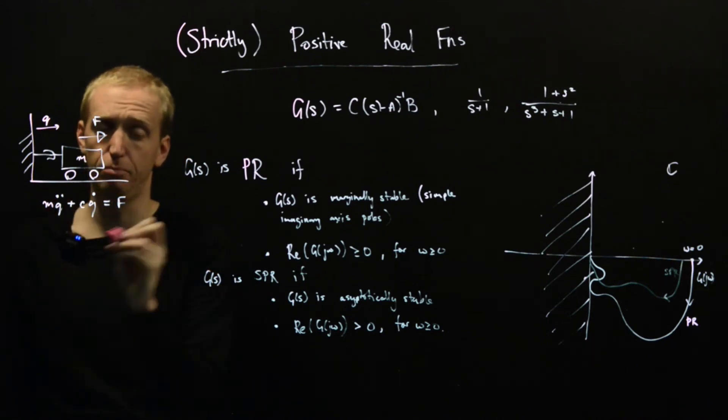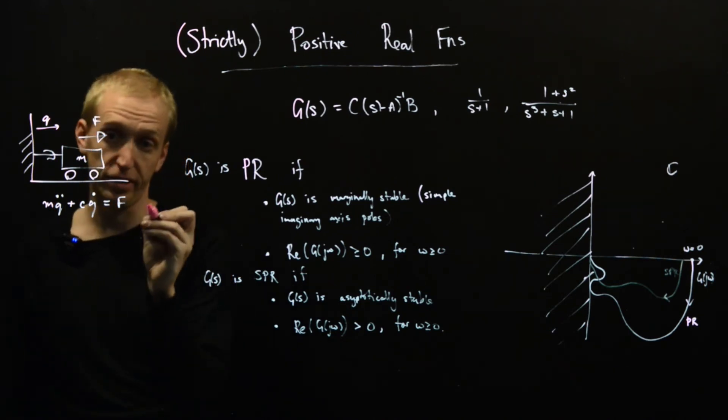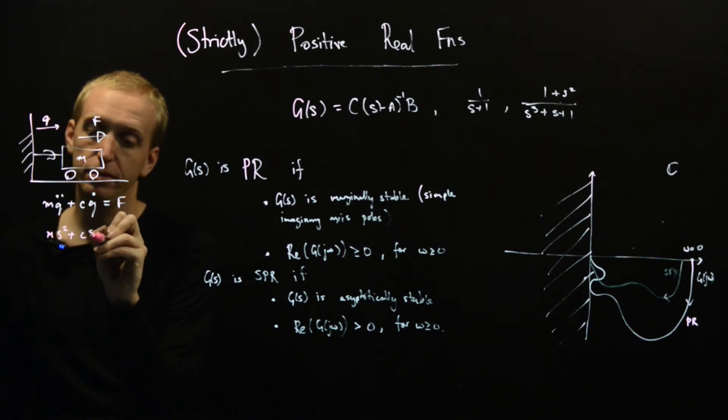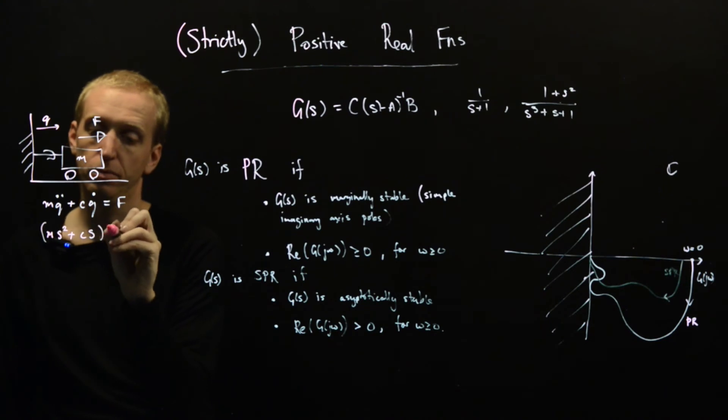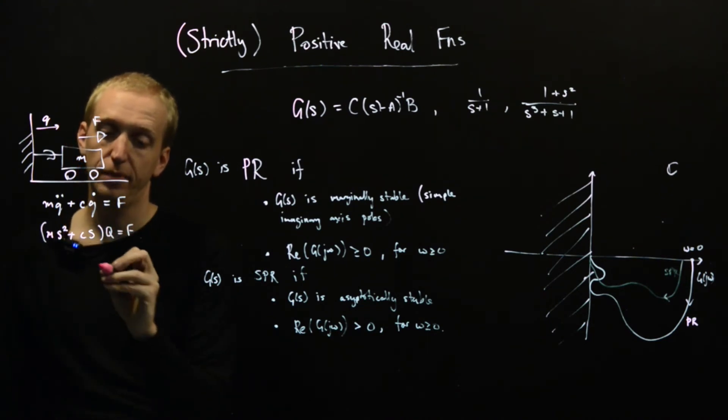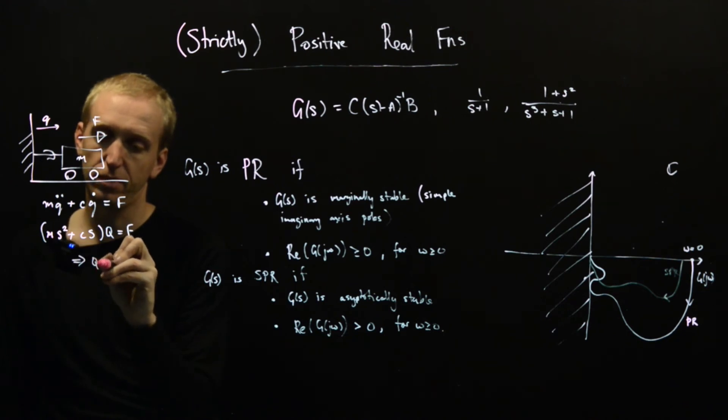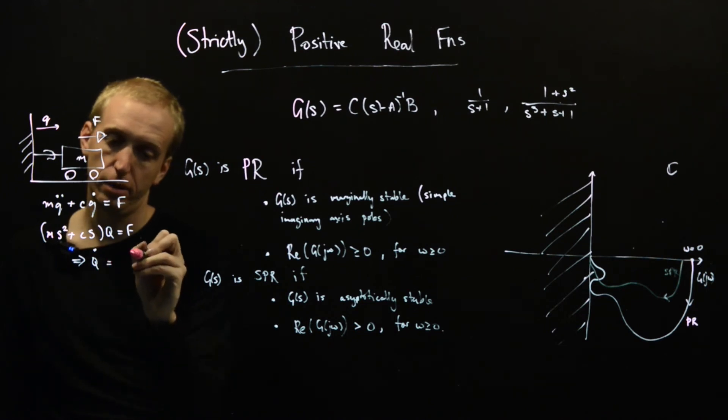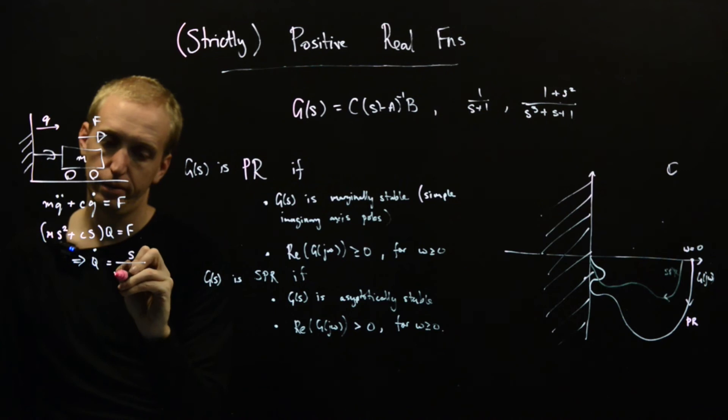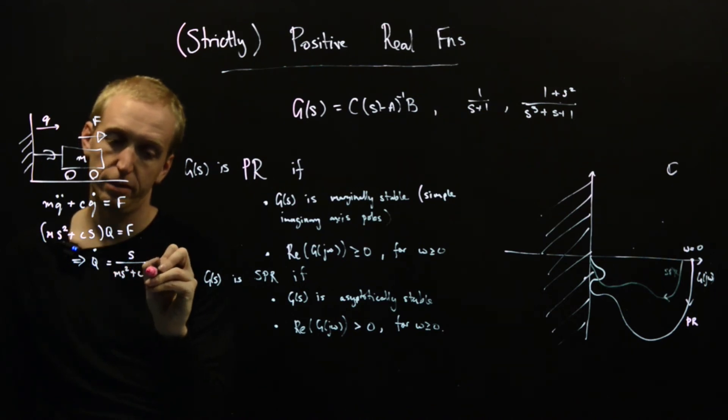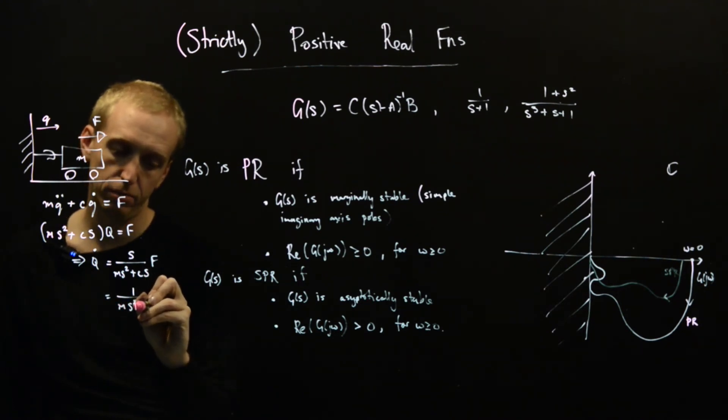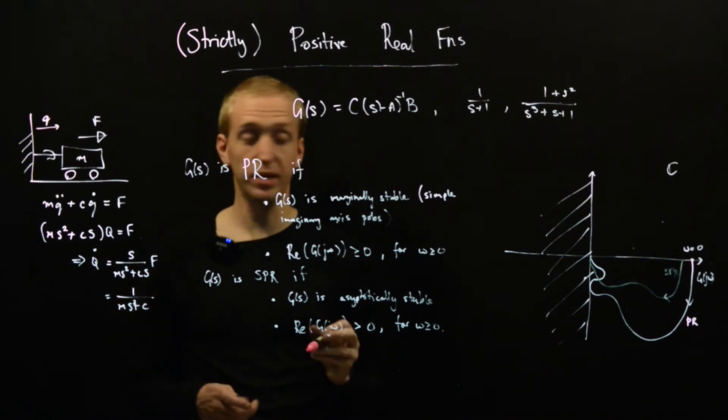And what happens if we put this in a transfer function from force to velocity? Well, if I take Laplace transforms here, I get m s squared plus c s multiplied by q is equal to f. And so that implies that q dot, so this is now the Laplace transform of q dot, is equal to s over m s squared plus c s times force. And this is equal to one over m times m s plus c.